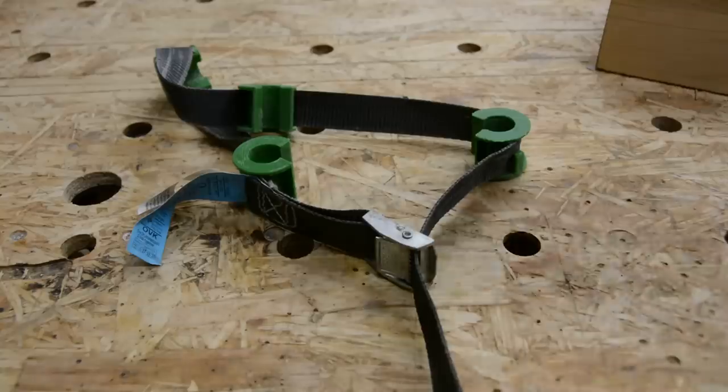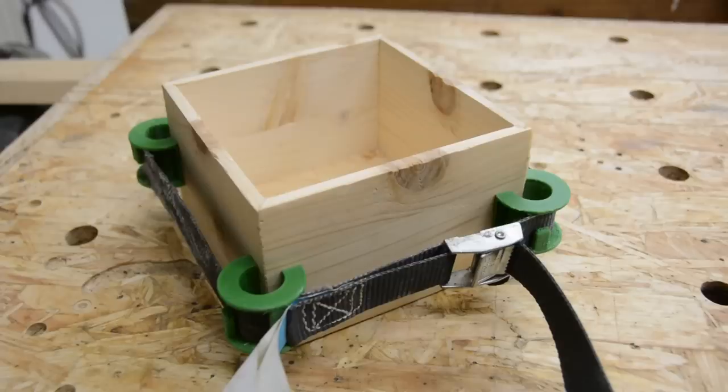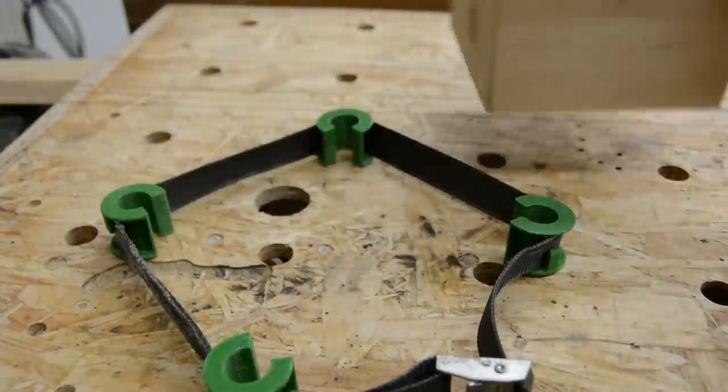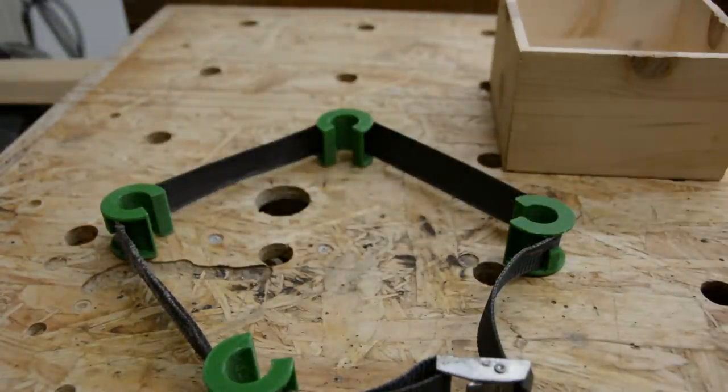Number 6 – corner clamps. With four of these prints and a ratchet strap, gluing up picture frames and boxes gets easy and reliable.